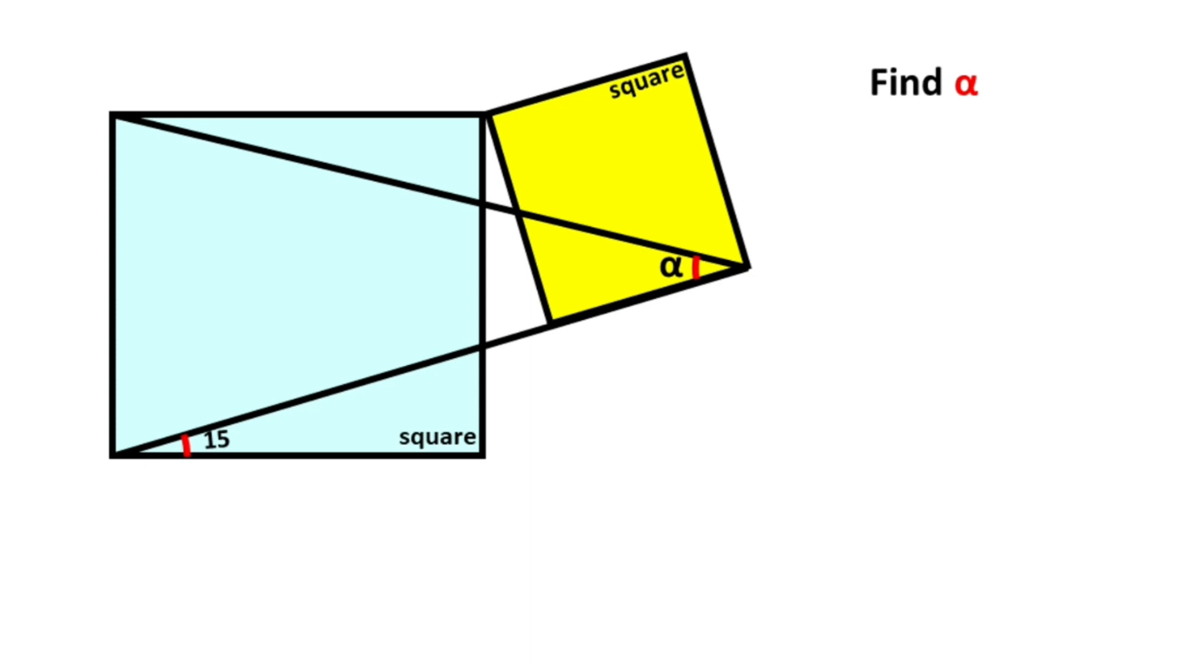First step, if we connect these two corners like this, this red line is diagonal of the square. So we know that here is 45 degrees. That means 30 degrees left here.